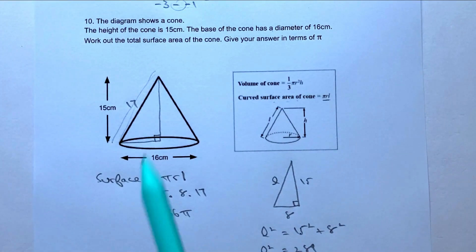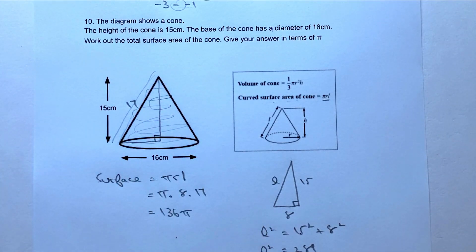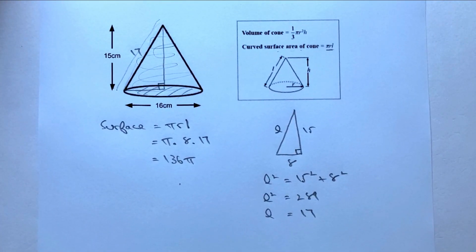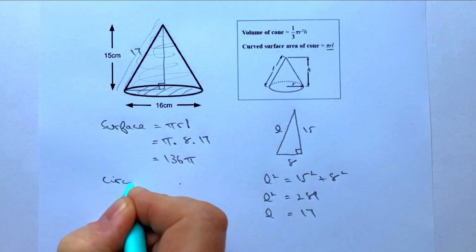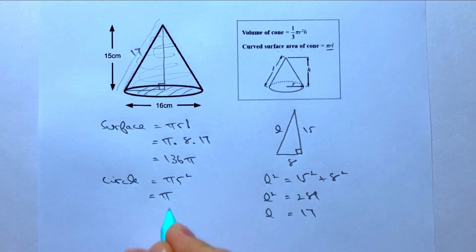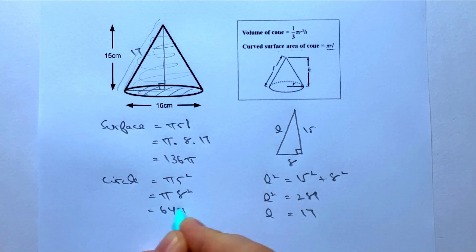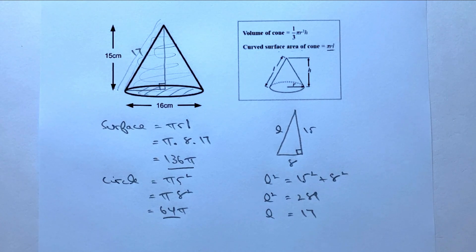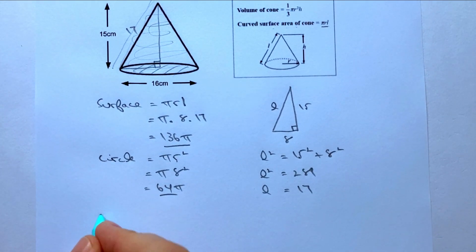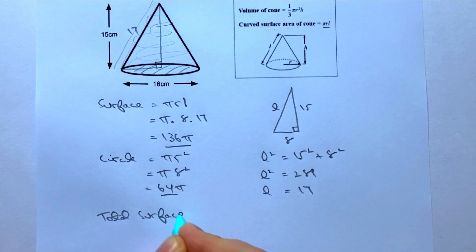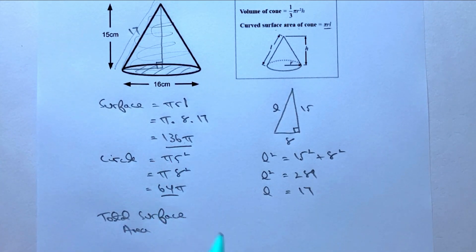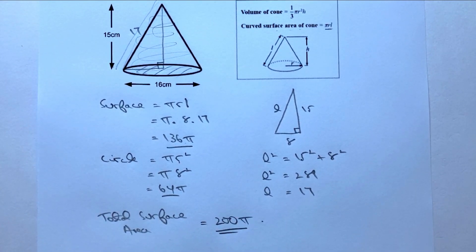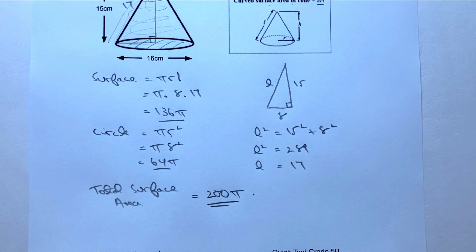Since the question asks for total surface area, also add the circular base: area = πr² = π × 8² = 64π. Total surface area = 136π + 64π = 200π. Please add a comment below if you're not sure about anything — I'll always come back to you.